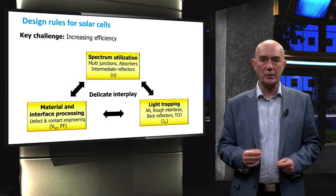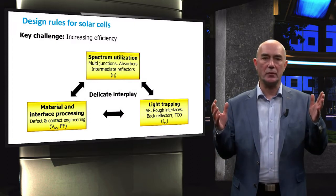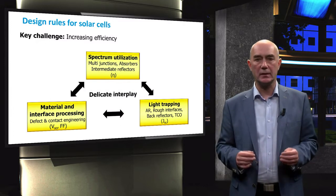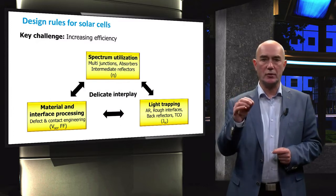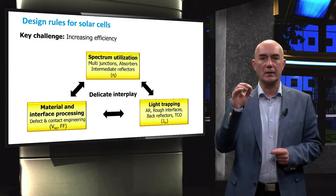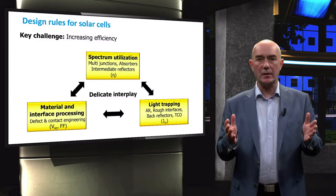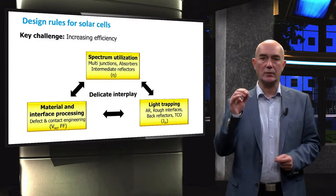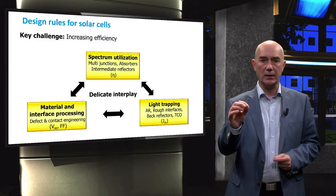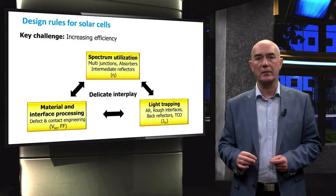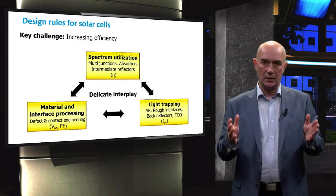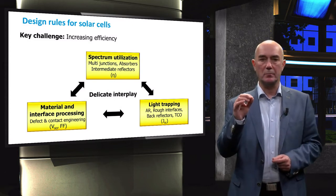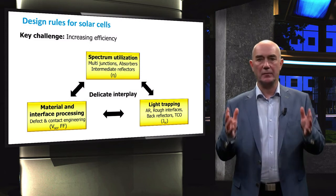This diagram shows the design rules for increasing the efficiency of solar cells. Better spectral utilization is achieved by the choice of absorber materials that build a solar cell. As discussed before, the number of photons that are absorbed by a solar cell and consequently the photocurrent are constrained by the bandgap of the absorber material.